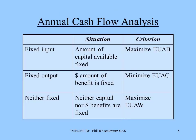Let's go to slide number five. Our decision criteria: for a fixed input situation, we're going to maximize our equivalent uniform annual benefit — we're trying to get the most out of what we're investing. When we have a fixed output situation, we want to minimize the equivalent uniform annual cost. And where neither are fixed, we want to maximize the equivalent uniform annual worth.